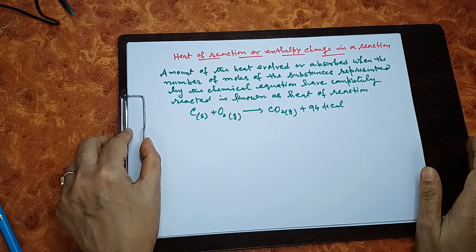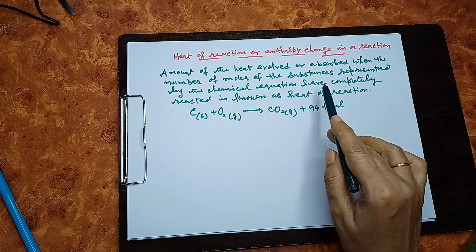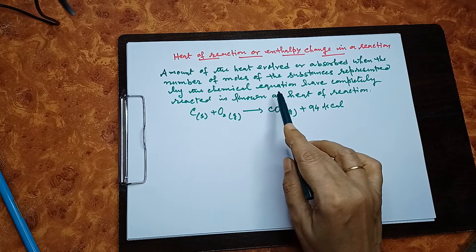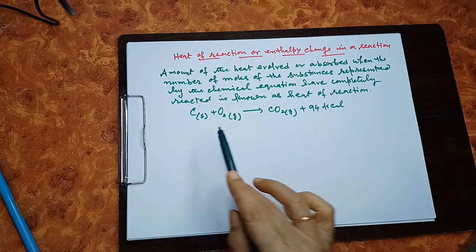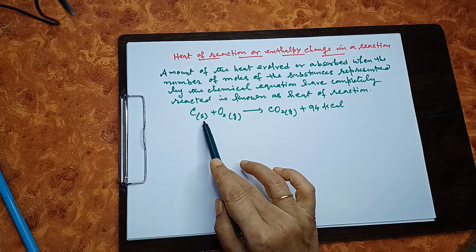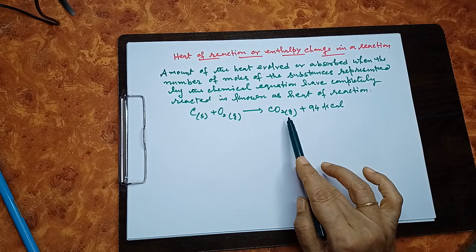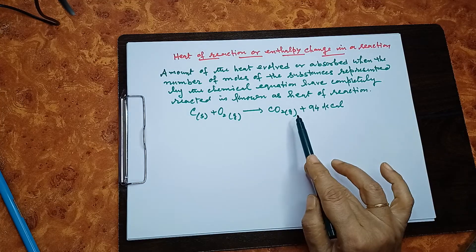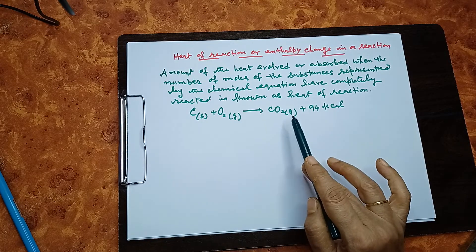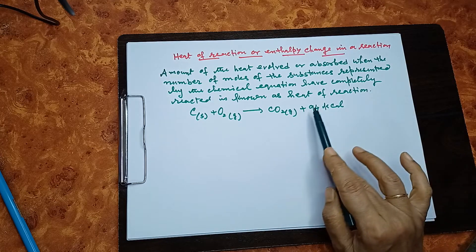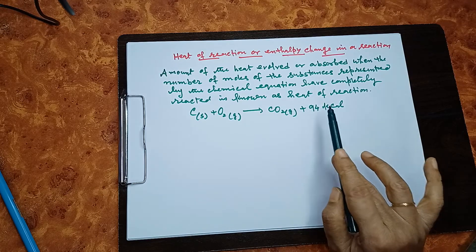Now, what is heat of reaction? It is the amount of heat evolved or absorbed when the number of moles of the substances — that means reactants — represented by the chemical equation have completely reacted. Here, one mole of carbon and one mole of oxygen, that means 12 grams of carbon and 32 grams of oxygen, gives 44 grams of carbon dioxide. The heat involved in this reaction is 94 kilocalories, so 94 kilocalories is the heat of this reaction.